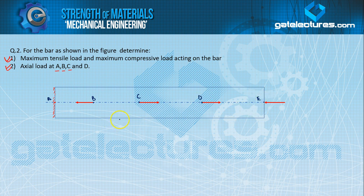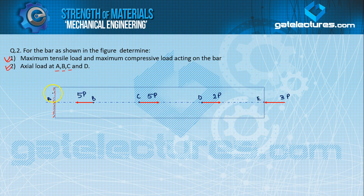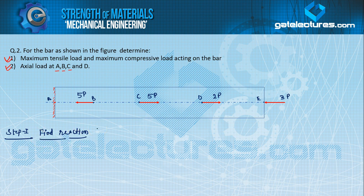Let us see how the loads are applied here. This is 3P, this is 2P, this is 5P, and this is also 5P on the sections AB, BC, CD, and DE respectively. Point A is the fixed point. So in this type of question, the first step is to find the reaction — find reaction with direction. To find the reaction, this bar is under static equilibrium condition.